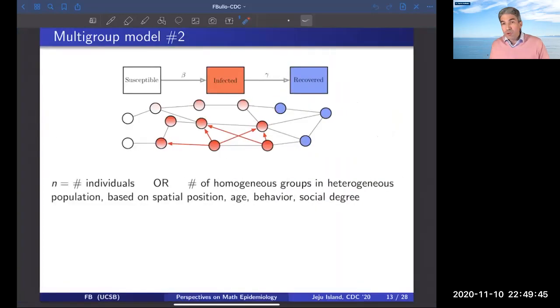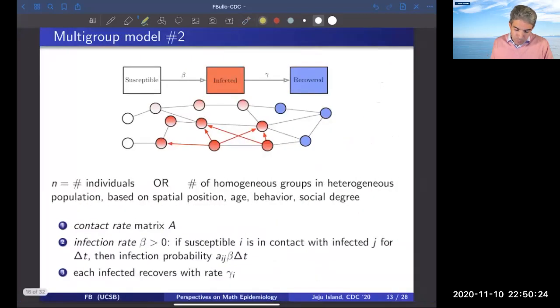Of interest in my talk today are multi-group models. I will be interested in understanding a number of individuals or equivalently the number of homogeneous groups in a heterogeneous population. The homogeneous groups could be grouped based on spatial position, based on age, behavior, gender, social degree, and so forth. When I talk about multi-group, the groups could be collected in a number of different ways. Of course, even here, you have transitions from susceptible to infected and from infected to recovered.